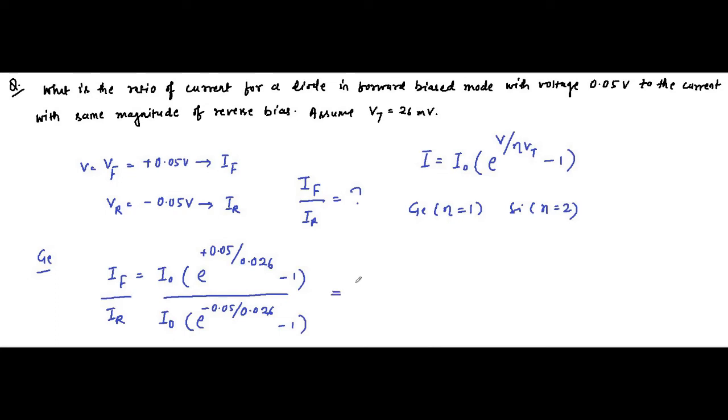And this is coming around, let us see, I0 will get cancelled. So simply this by this. So it will be e to the power 0.05 plus 0.05 over 0.026 minus 1. So it is coming around 5.84 divided by minus 0.853, which is equal to minus 6.84. This is the ratio which is for germanium.